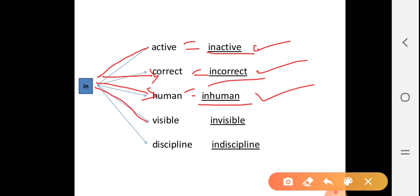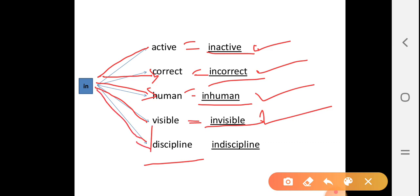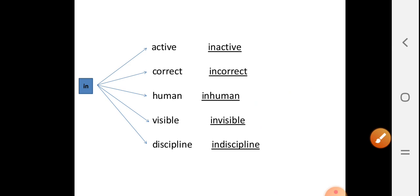Fourth one, 'visible'. After joining 'in' to 'visible', we get the answer: invisible. Next, last one — 'discipline'. After joining 'in' to 'discipline', we get the answer: indiscipline.